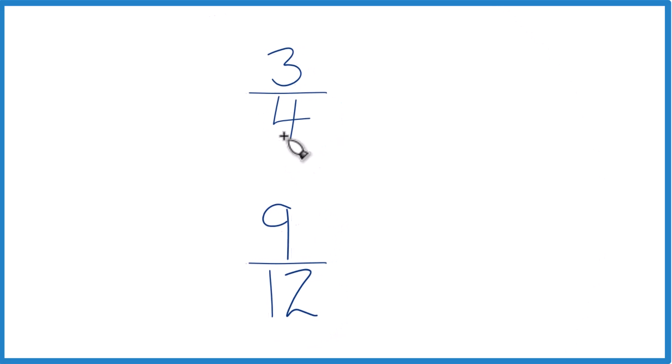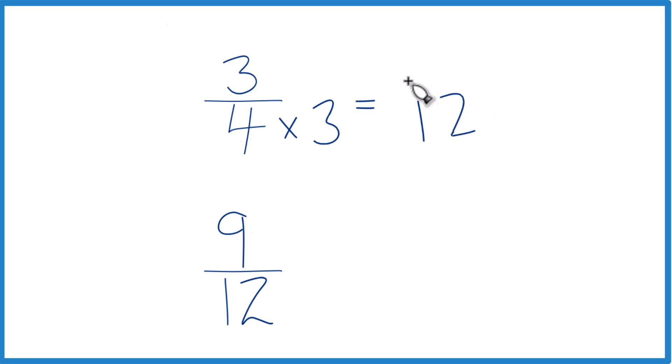So let's take 4 times 3. 4 times 3, that equals 12. Down here we already have 12, so let's just keep this as 9 twelfths.